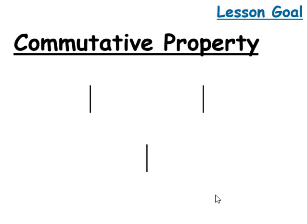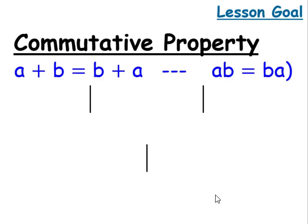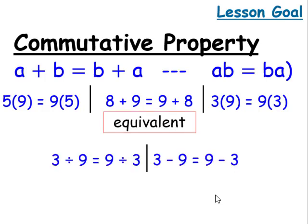The lesson goal for today is dealing with the commutative property, which states that the order in which we add or multiply doesn't matter. We're still going to end up with equivalent expressions. This doesn't hold true for division and subtraction.